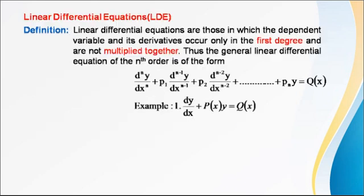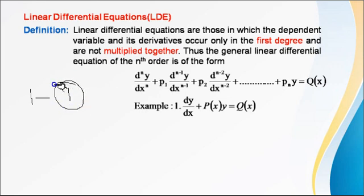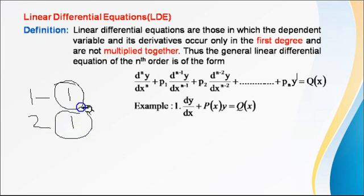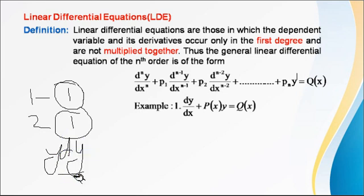What is a linear differential equation? For a differential equation to be linear, three conditions must be satisfied. First, the degree of the differential equation is 1. Second, the exponent of each dependent variable is 1 — here the dependent variable is y, so y's exponent must be 1. Third, there is no term that is a product of y and dy/dx. If it satisfies these conditions, then it is a linear differential equation.